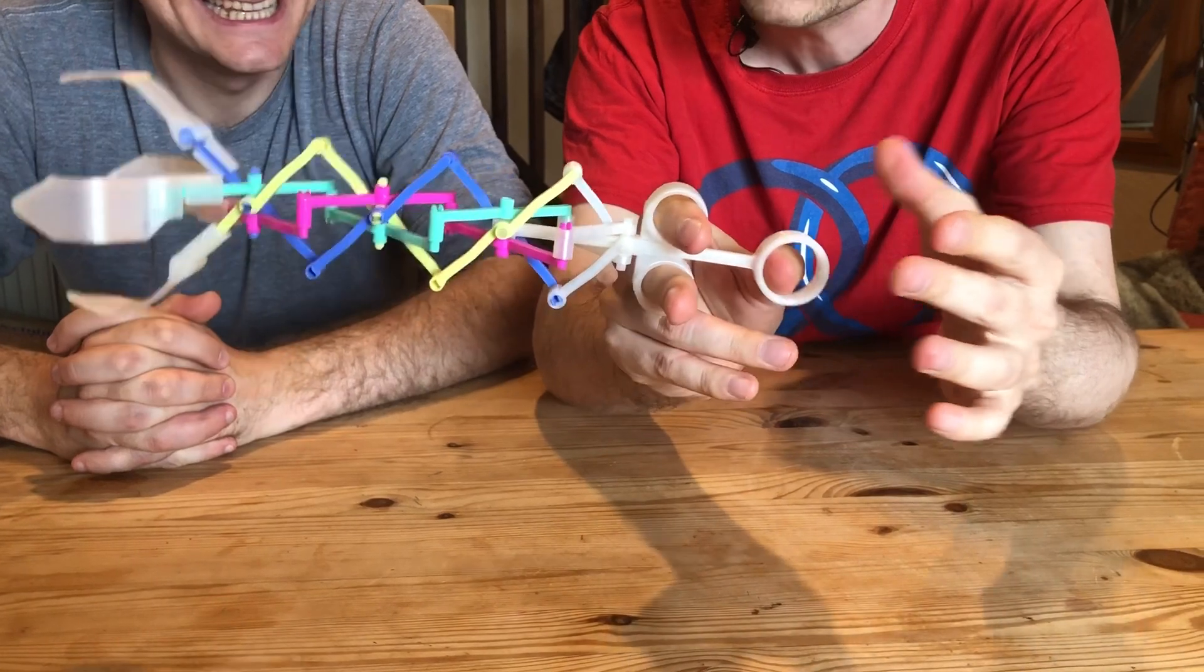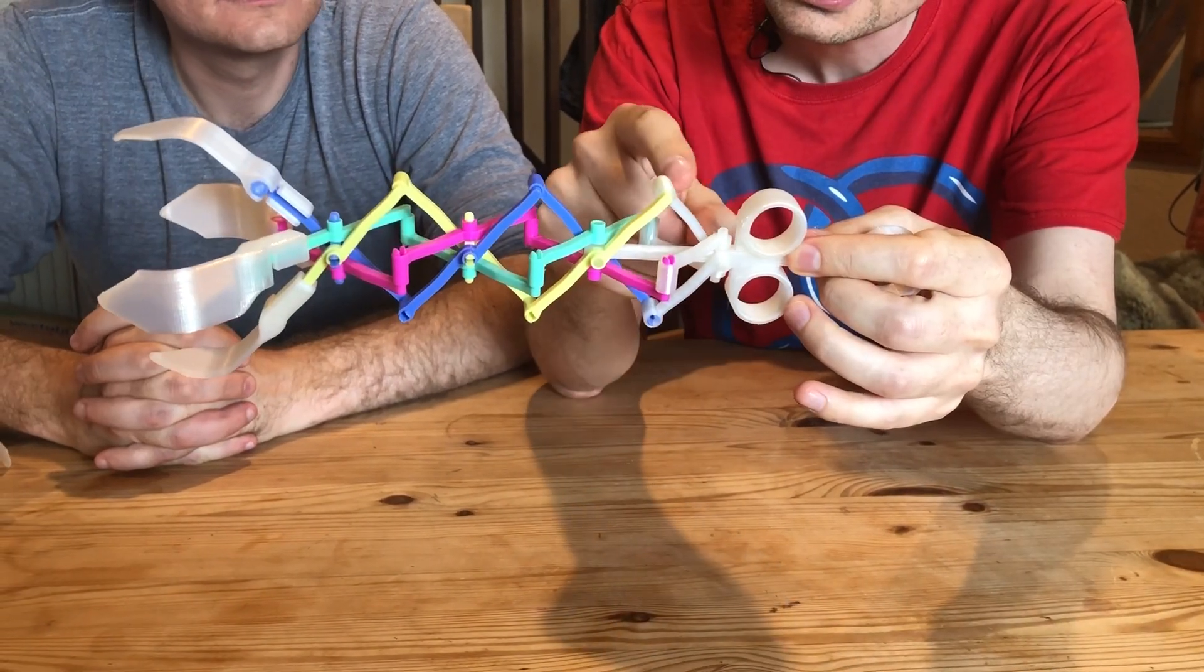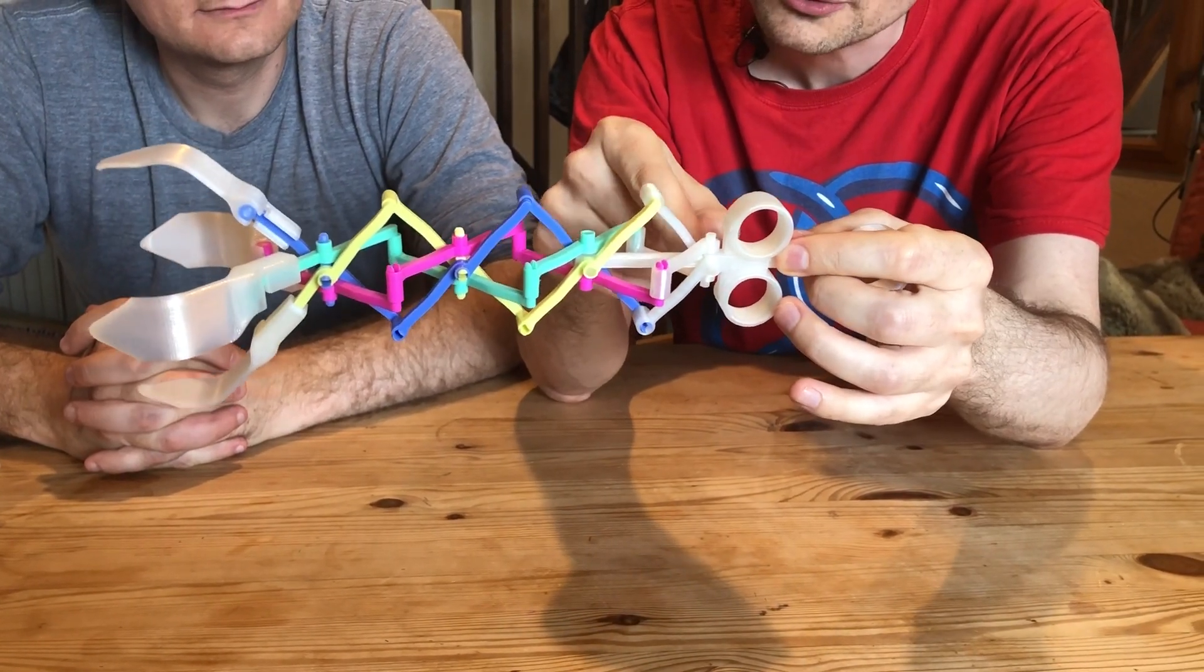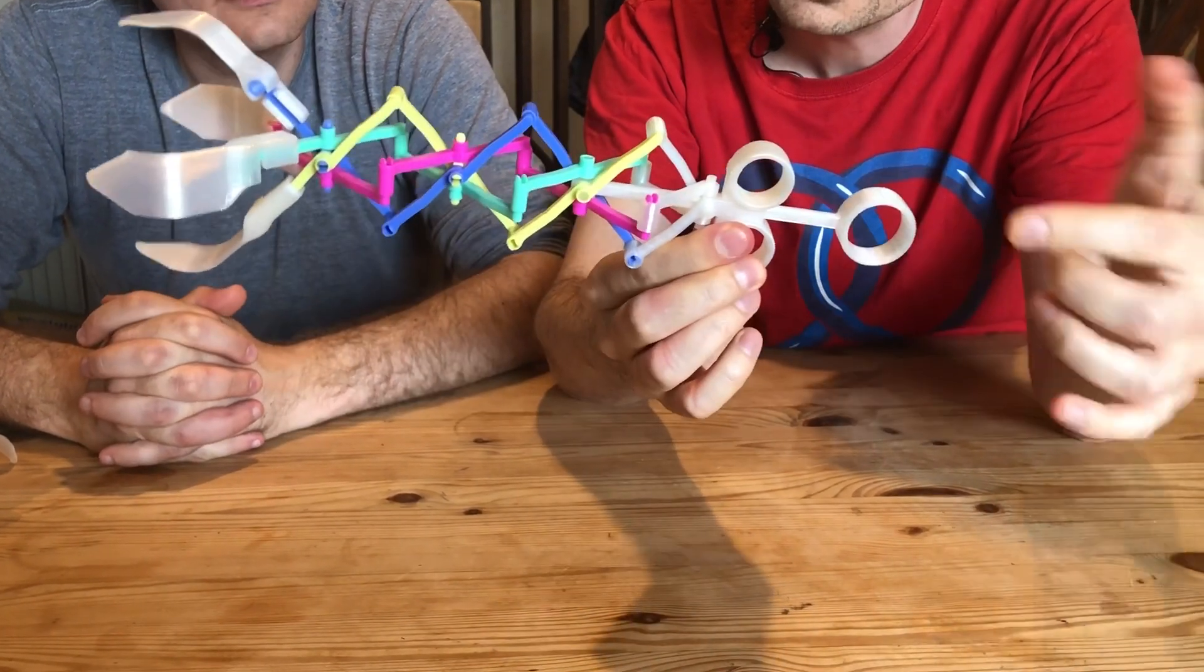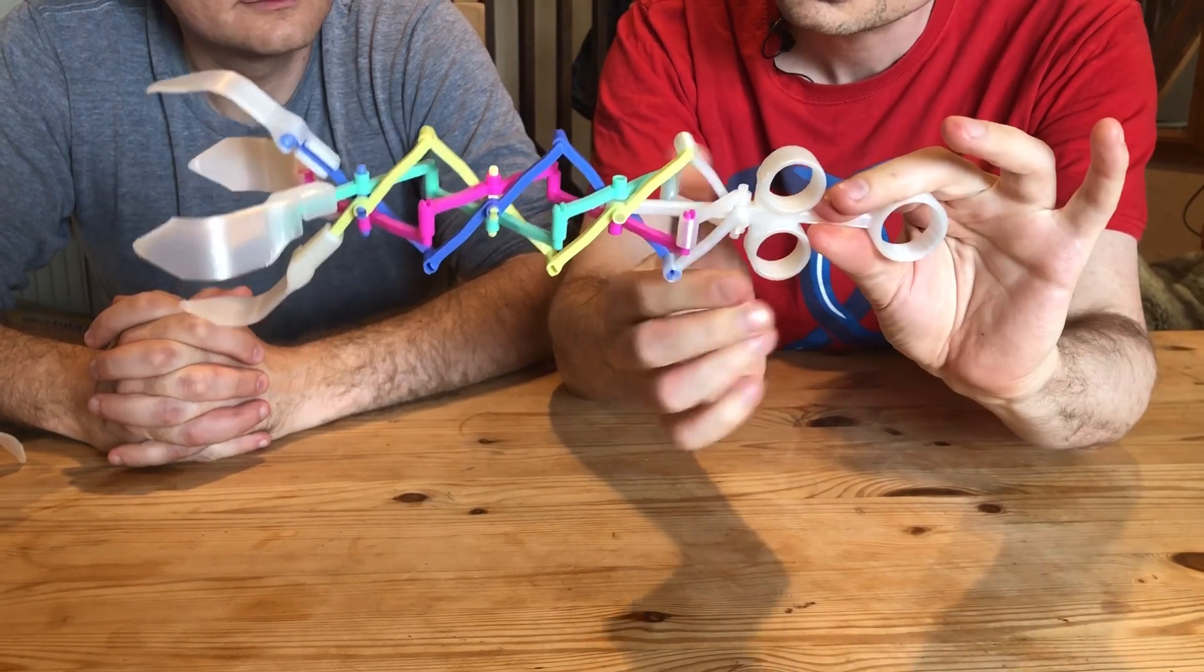So the thumb part slides through the middle finger part. The two middle fingers are attached to this sort of X shaped piece, which is the same as one of these. And then the thumb goes through and is attached to another one.